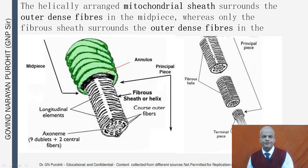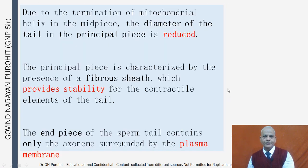The helically arranged mitochondrial sheet surrounds the outer dense fibers in the midpiece, whereas only the fibrous sheet surrounds the outer dense fibers in the principal piece. Due to termination of the mitochondrial helix, the diameter of the tail in the principal piece is reduced. The principal piece is characterized by the presence of a fiber sheet providing stability for the contractile elements. The end piece contains only the axoneme surrounded by the plasma membrane.